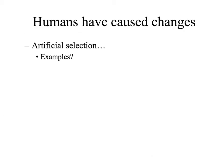We can also see that humans have caused change in organisms. Artificial selection is the process where humans pick selected traits or beneficial traits in an organism, and we affect their breeding and reproduction to make sure that those beneficial traits get passed on from generation to generation.